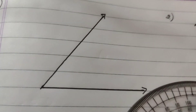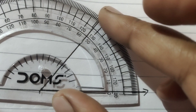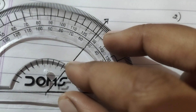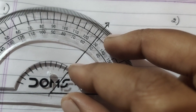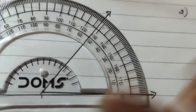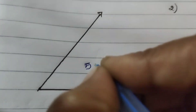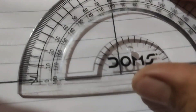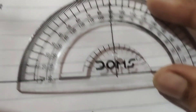Here is the first angle drawn. Let's measure it — it is fifty-two degrees. So the first angle is 52 degrees. Now the second one is ninety degrees.